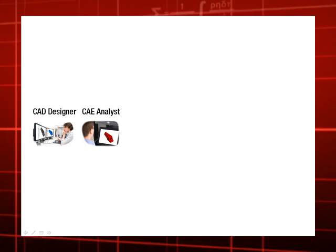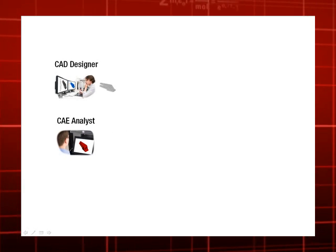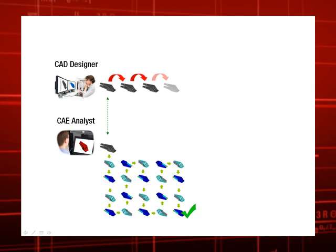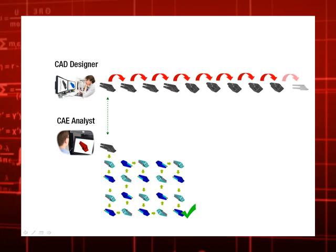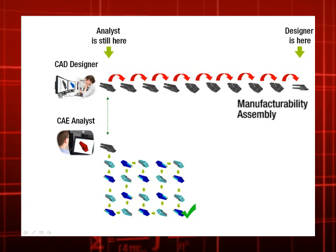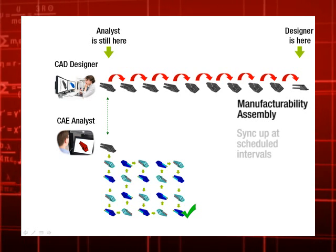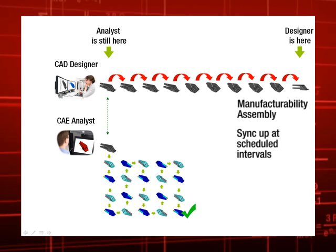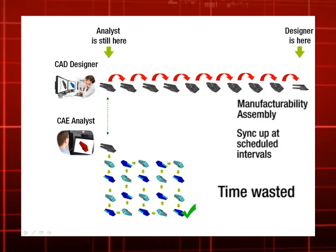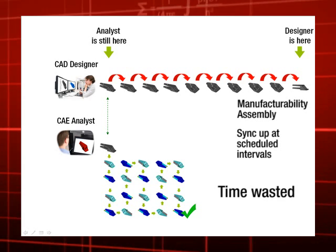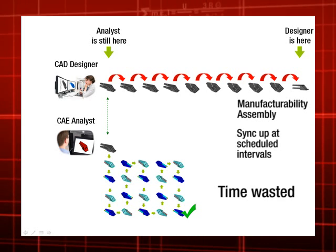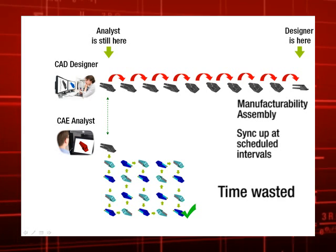To add to this, the CAE analyst goes off in one direction with his iterations to meet performance targets while the CAD designer continues to make changes to his part considering manufacturability and assembly. The CAD designer and the CAE analyst only sync up at a scheduled interval. As a result, a lot of time gets wasted going back and forth between the two individuals and departments. Analysts waste time redoing the same FE setup and there is always the potential of information loss due to translation.